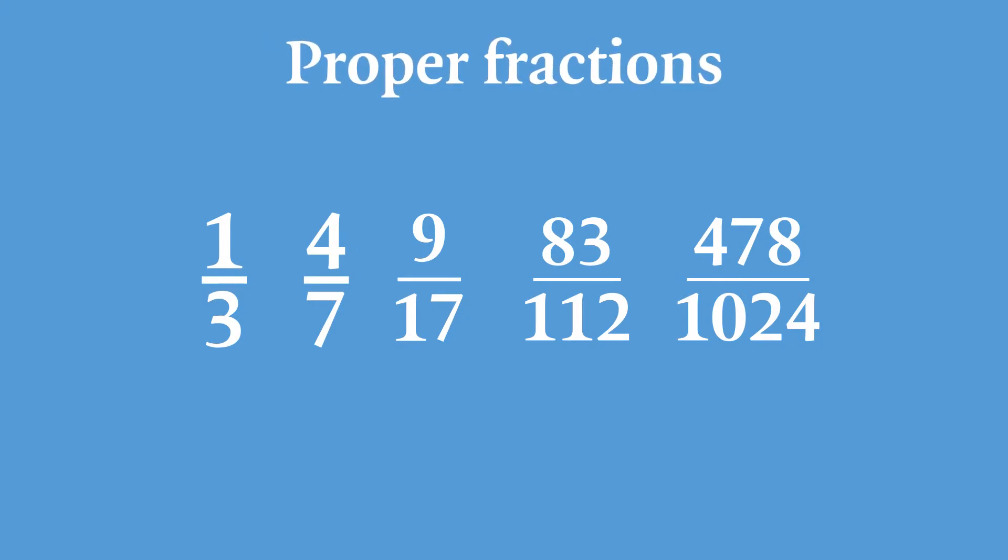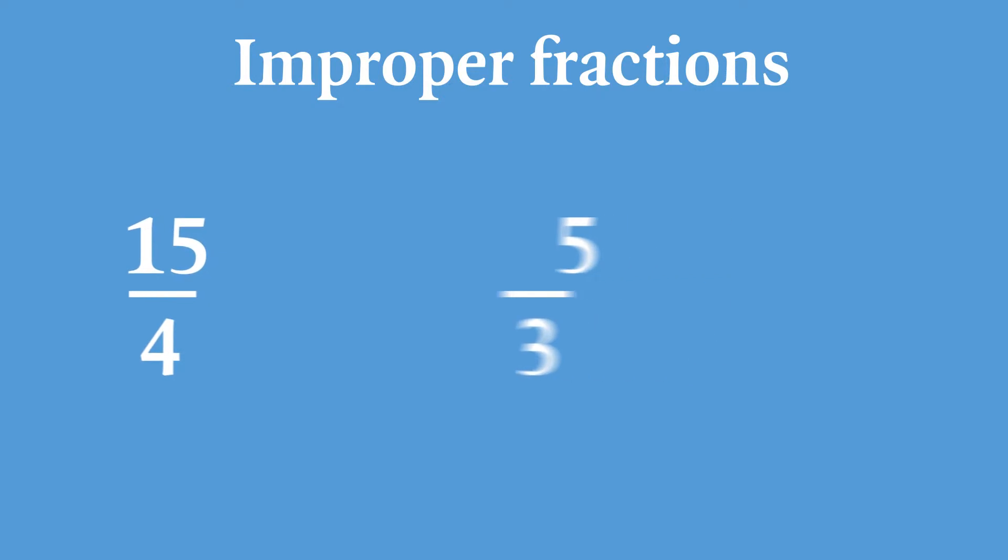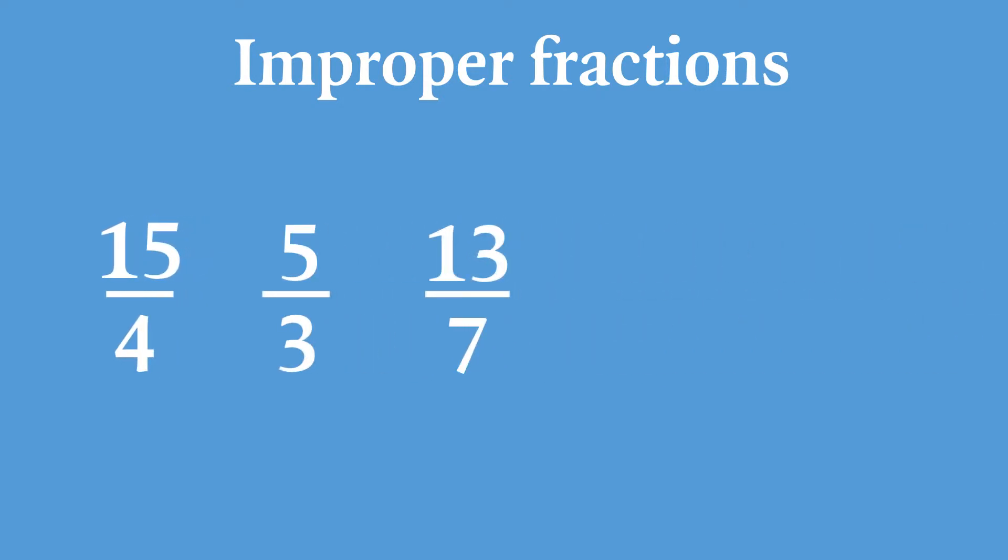So what happens when the numerator is bigger than the denominator? We call these improper fractions. Other examples would be... Improper fractions can be further simplified.